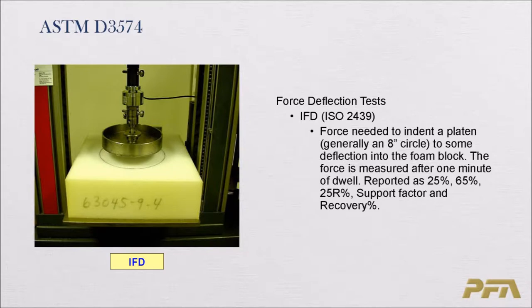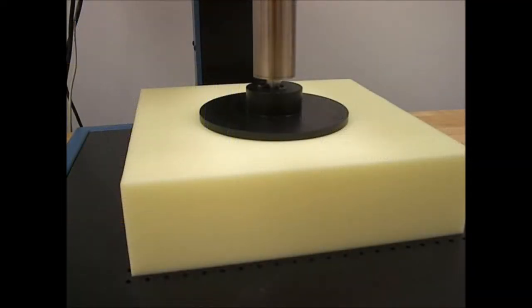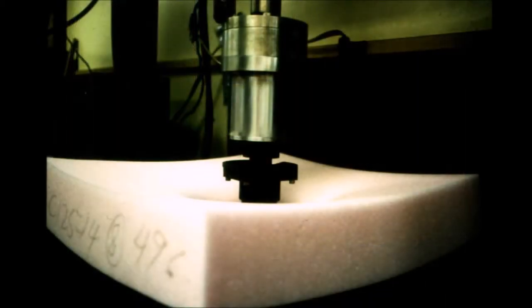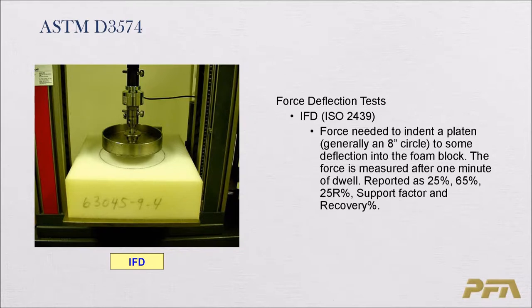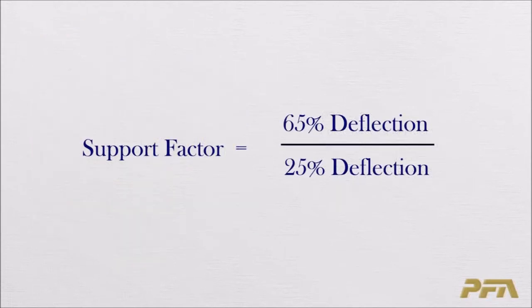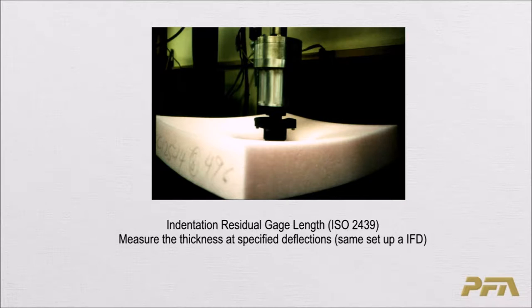Next are the hardness tests, which are force deflection tests. The first is Indentation Force Deflection (IFD). Using an electromechanical universal testing machine with an 8-inch indenter, you deflect the foam to a certain deflection — most commonly 25%, 65%, and 25% return. These values are used to calculate support factor and percent recovery. Support factor, also a comfort measurement, is the ratio of the 65% deflection value divided by the 25% value.